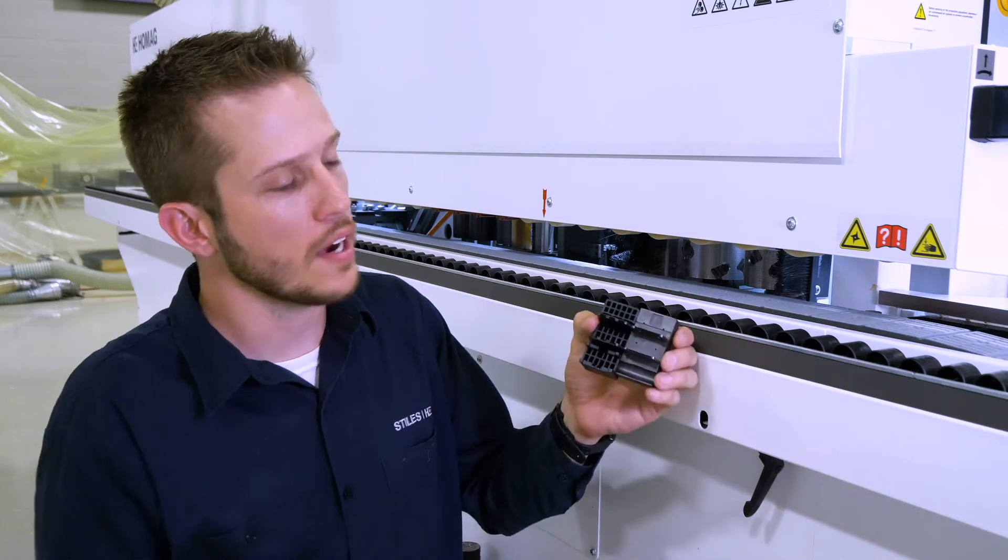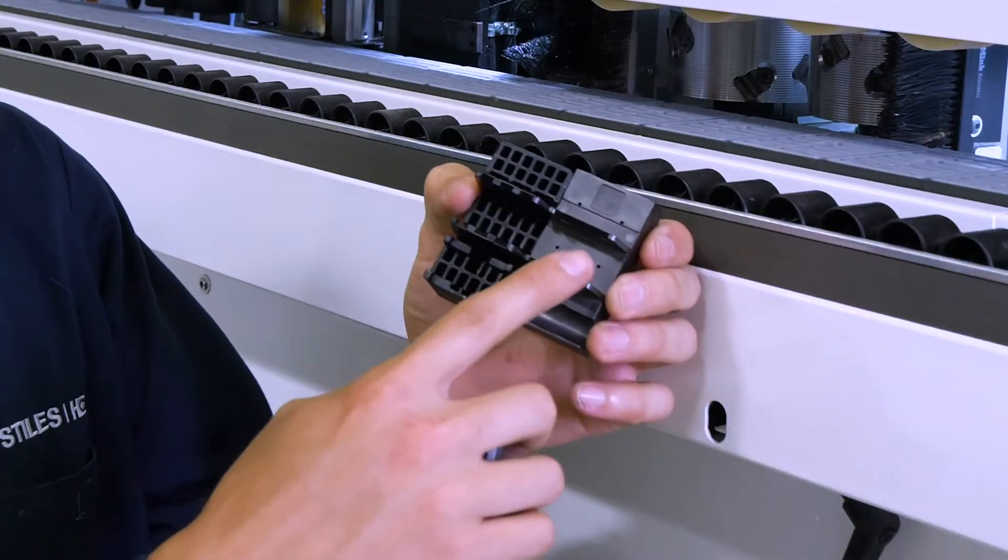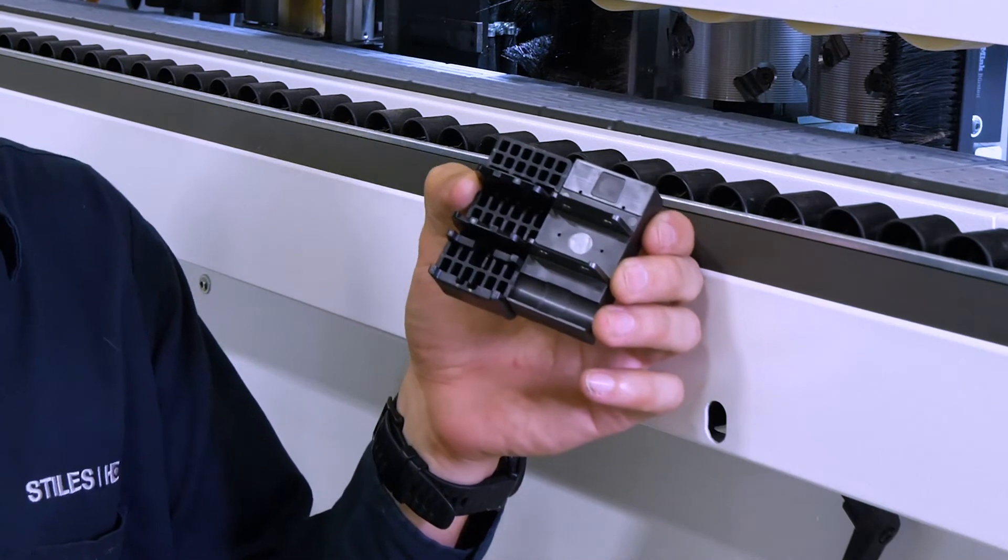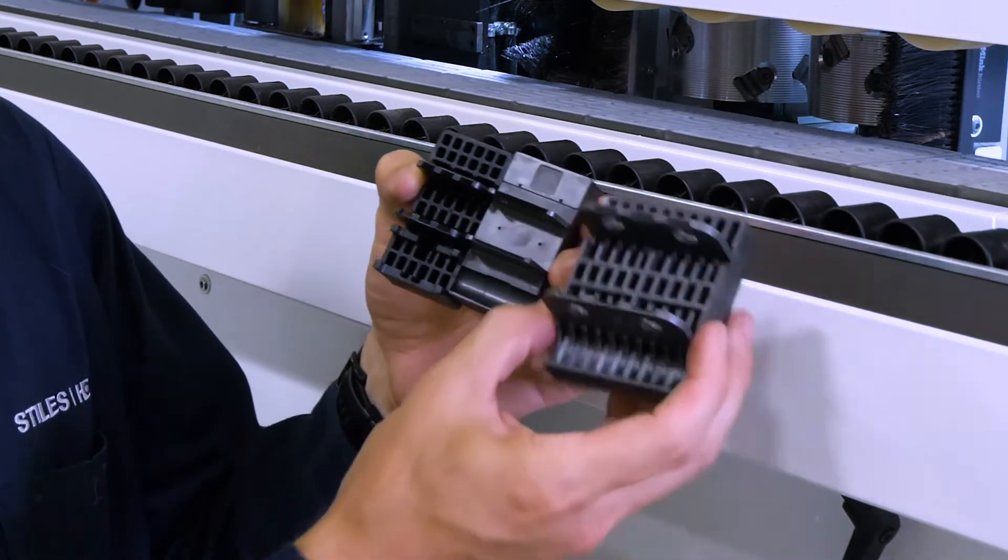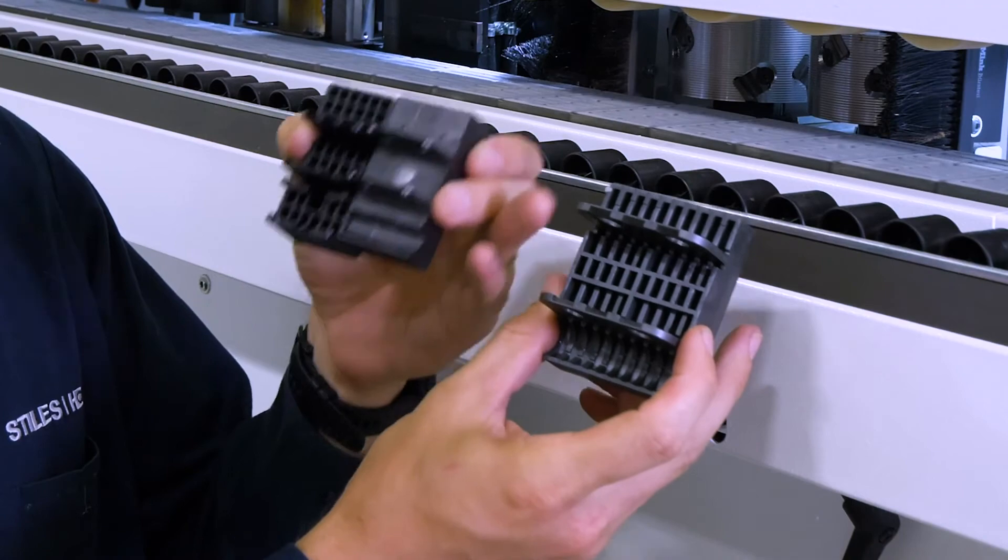If I flip our competitor trackpads around, you can see that the tabs in which these pads mount onto our track chain are much thinner and smaller than the Home Egg trackpad seen here.